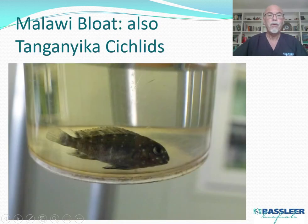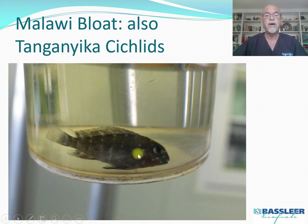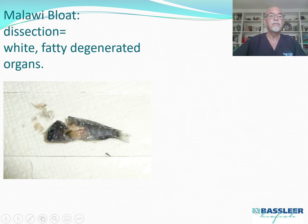Malawi bloat can also be seen in Tanganyika cichlids. Here we see a Tanganyika cichlid — a Tropheus Duboisi — with a swollen belly. It's getting pale, listless, with fast respiration.